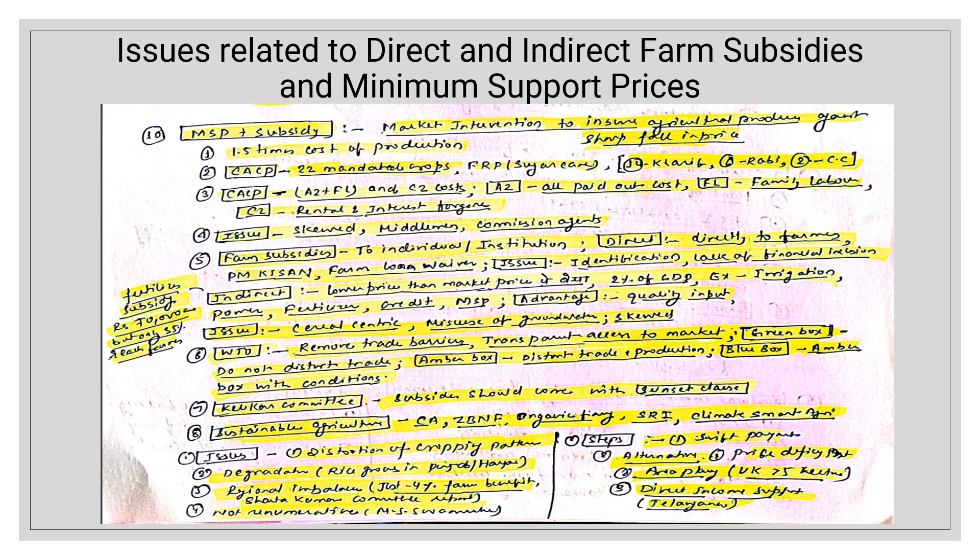MSP is basically a market intervention to ensure agriculture produce against sharp falling prices. What happens is that farm produce, because of sharp falling prices due to overproduction or other reasons, leads to distressed selling by farmers. To protect farmers from this, a minimum support price is fixed so that they are guaranteed a certain price. This is recommended by CACP — Commission on Agriculture Cost and Prices.